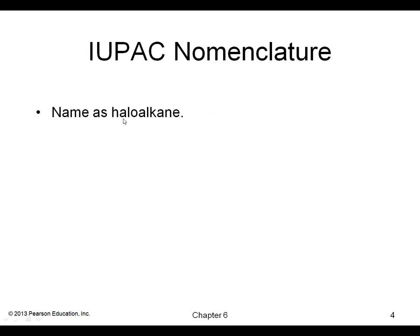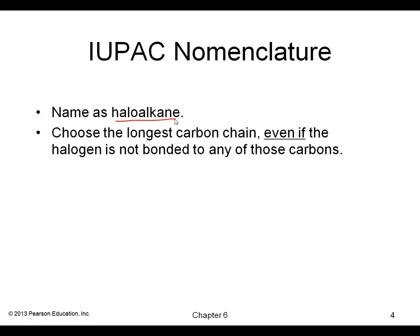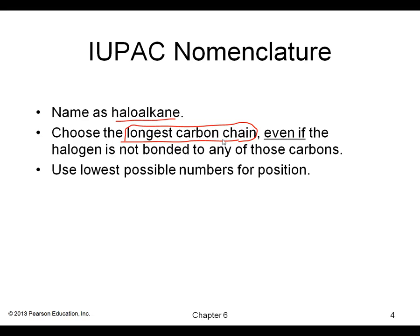How do we name alkyl halides? Choose the longest carbon chain, even if the halogen is not bonded to any of those carbons — this parent chain is always the longest continuous carbon chain in the molecule. We'll use the lowest numbers for position. Here's an example: we have the chlorine on the second carbon of four carbons in a row, so we have 2-chlorobutane. Remember, the halogens are named chloro, fluoro, iodo, bromo, and so forth.